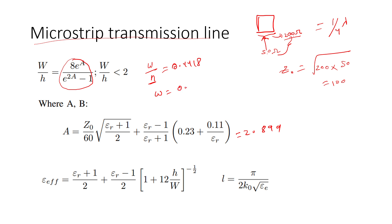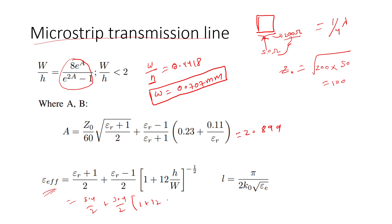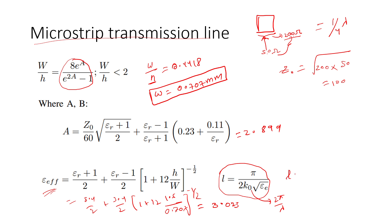Substituting the A value of 2.899 into the formula gives W/h = 0.4418. Since h = 1.6 mm, the width W = 0.707 mm. Using this width, ε_effective = (5.4/2) + (3.4/2) · (1 + 12 · h/w)^(−1/2) = 3.023, with h = 1.6 mm and w = 0.707 mm. The length of the quarter-wave transmission line is L = c / (4·fr·√ε_eff) = 17.97 mm.